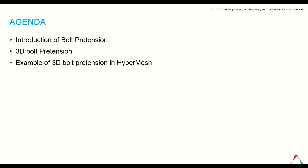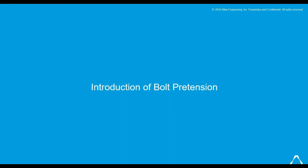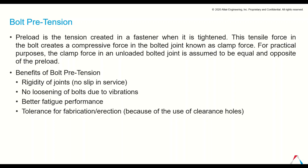Bolt pretension is defined as the tension created in a fastener when it is tightened. This tensile force in the bolt creates a compressive force in the bolted joint known as clamp force. For practical purposes the clamp force in an unloaded bolted joint is assumed to be equal and opposite. The benefits of bolt pretension are rigidity of the joints with no slip, no loosening of bolts due to vibration, better fatigue performance, and tolerance of fabrication.